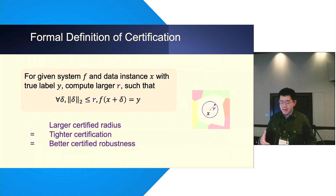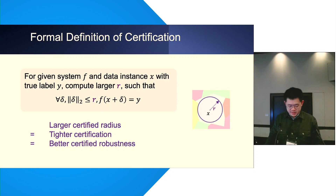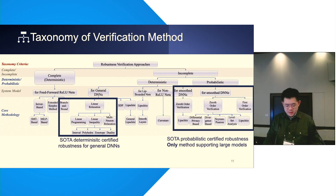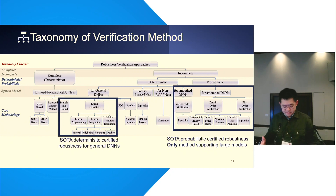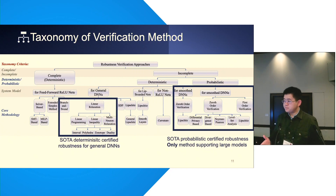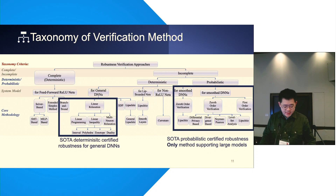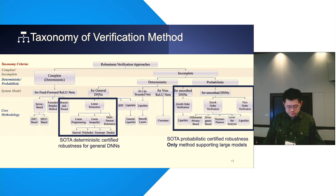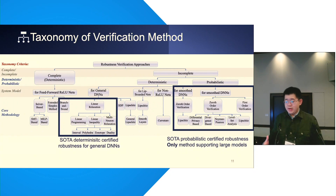The goal is to compute a larger radius R such that for any perturbation delta within this radius R, the deep learning system F always predicts correctly. A larger certified radius means tighter certification and a better robustness guarantee. Our SOK provides a comprehensive taxonomy for existing methods; I will briefly introduce two types: linear relaxation and randomized smoothing. Randomized smoothing is more scalable than the linear relaxation method.